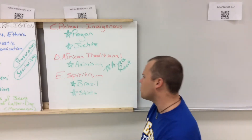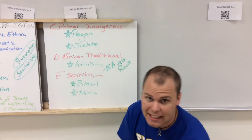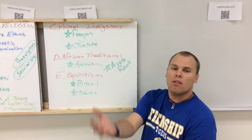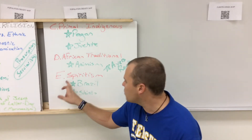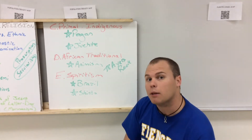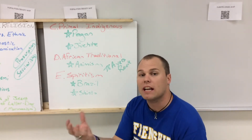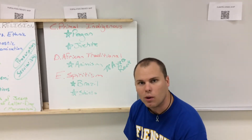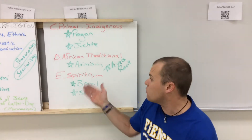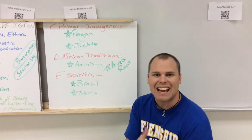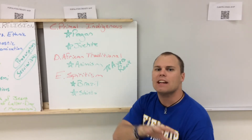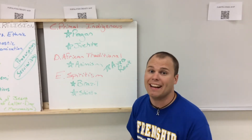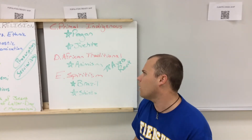Next is spiritism — the idea that people have spirits, and when they die, those spirits remain on earth. In Brazil, spiritism involves the belief that psychics and mediums can contact these spirits here on earth. In Japan, there is Shintoism, a form of spiritism focused on ancestral worship — the idea that ancestors follow families around and look out for them.